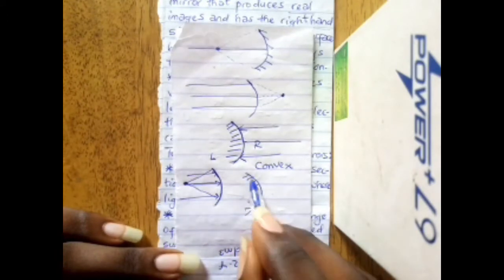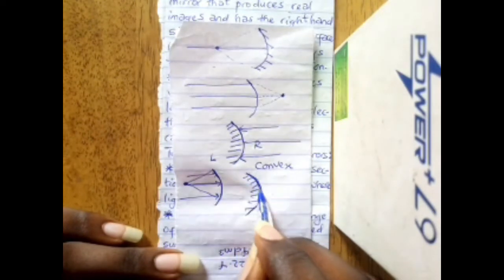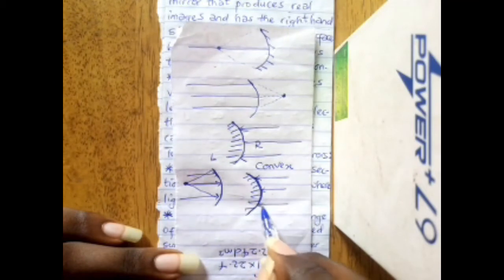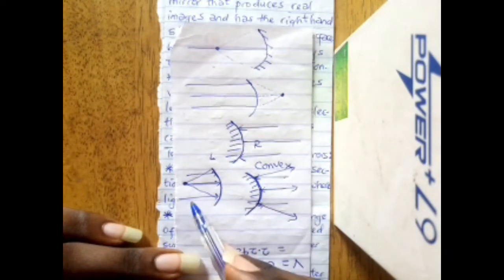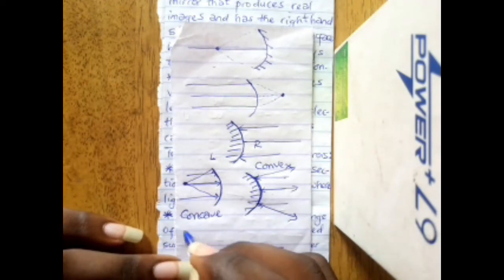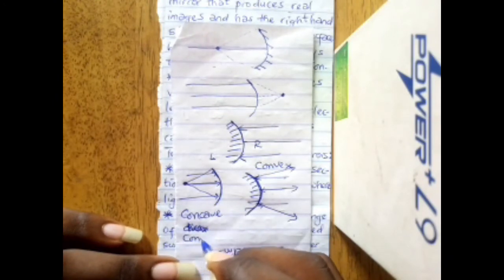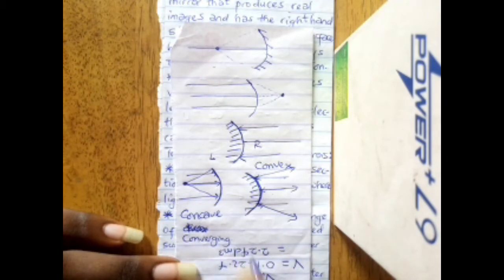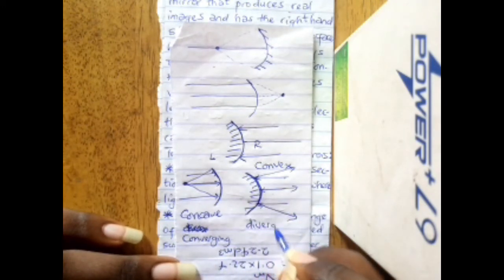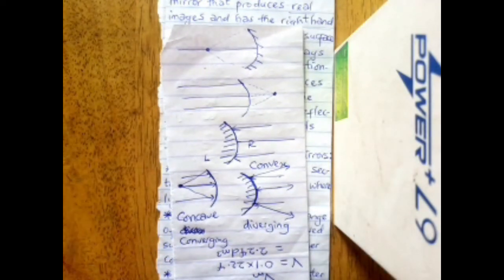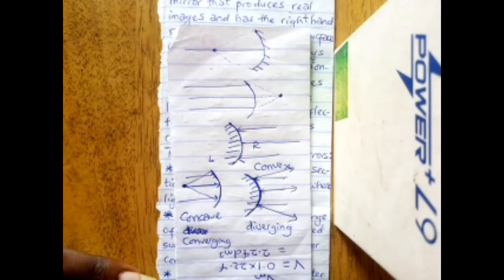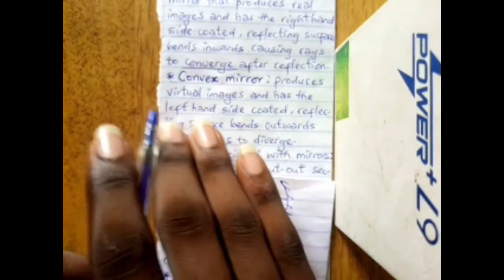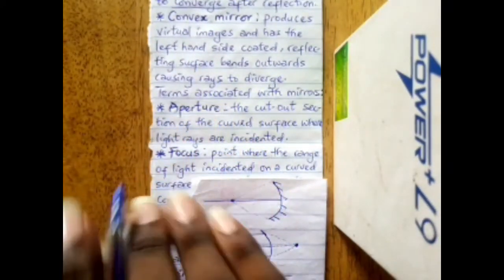A concave mirror is also known as a converging mirror, while a convex mirror is also known as a diverging mirror. For converging rays, they tend to meet at a point, while diverging rays spread out from a known point. That covers concave and convex mirrors.